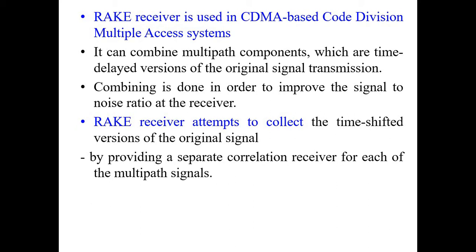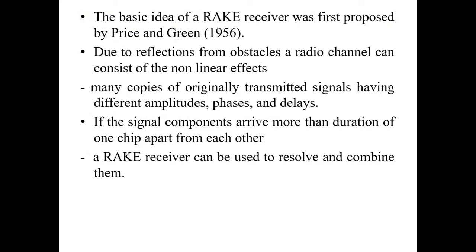At the receiving side, we can combine all these components with the help of the necessary device. The RAKE receiver attempts to collect the time-shifted versions of the original information signal which we have transmitted. By providing a correlator structure like a finger or RAKE finger, we can collect all the information and finally get a good signal with high SNR. This idea was proposed by Price and Green in the year 1956.